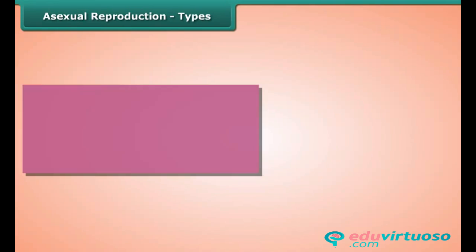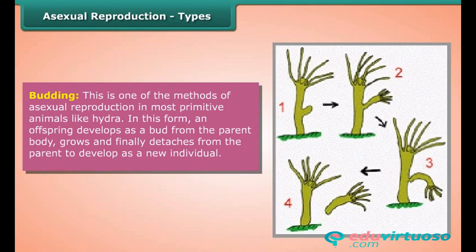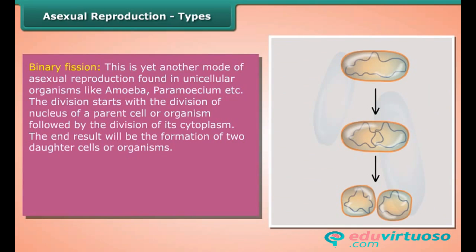Asexual reproduction types: Budding is one of the methods of asexual reproduction in most primitive animals like hydra. In this form, an offspring develops as a bud from the parent body, grows, and finally detaches from the parent to develop as a new individual.